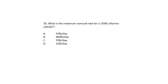Question 18. What is the maximum removal rate for a 150-pound chlorine cylinder? 42 pounds a day, 400 pounds a day, 55 pounds a day, or 22 pounds per day? The maximum removal rate for a 150-pound chlorine cylinder is 42 pounds per day. Anything over that will cause the line to freeze.